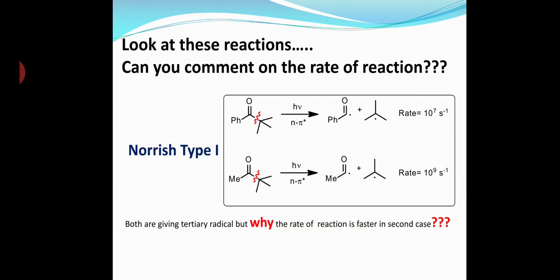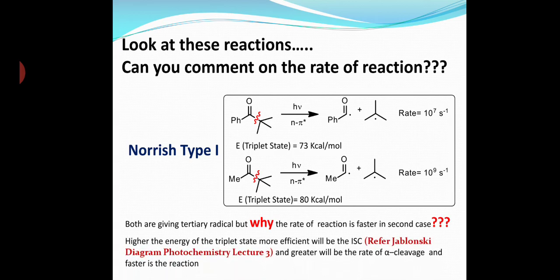Note that the energy of the triplet state in the first reaction is 73 kilocalories per mole, while the energy of the triplet state for the second reaction is 80 kilocalories per mole. Higher the energy of the triplet state, more efficient will be the inter-system crossing, greater will be the rate of alpha cleavage, and faster will be the reaction. So the rate of the second reaction is much faster than that of the first reaction, because its triplet state is of higher energy, even though both reactions give tertiary radicals.